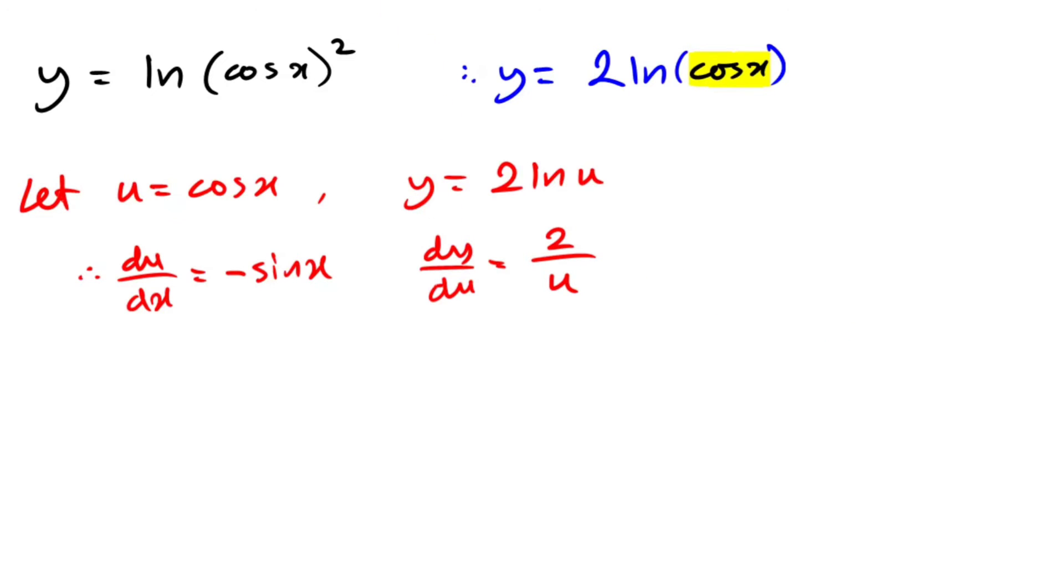And now for this problem, all you have to do when you use the chain rule is that you just multiply the last two derivatives. So you just multiply these two. And that's it. When you do that, you're pretty much done. So we say, therefore, dy over dx must be minus sin x times 2 over u.